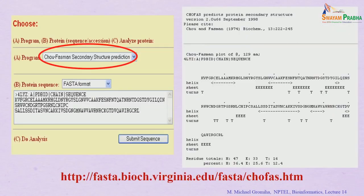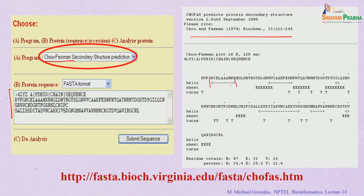Several web servers are available for Chou-Fasman-based secondary structure prediction. You provide the sequence in FASTA format and the server applies the 1974 Chou-Fasman parameters. The output shows predicted helical regions, strand regions, and turn regions, allowing you to visualize the predicted secondary structure of your protein.